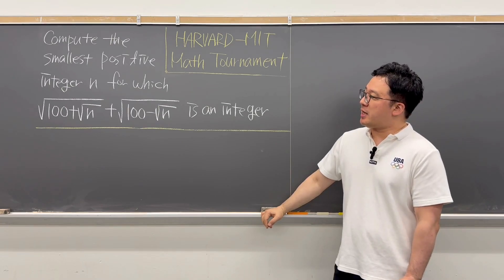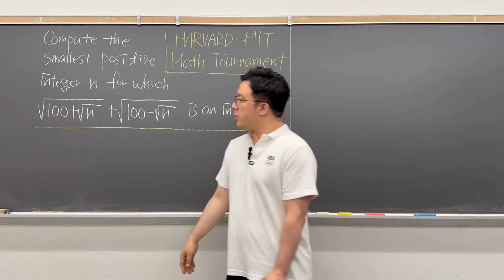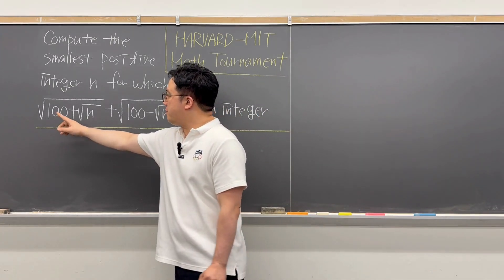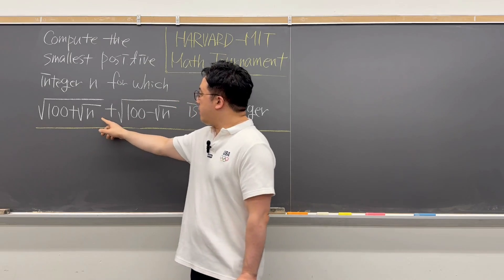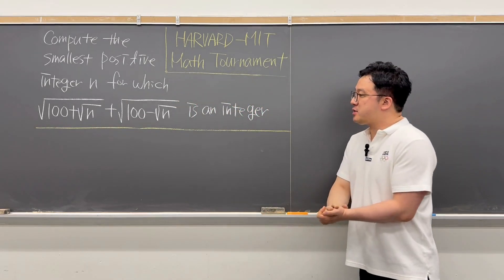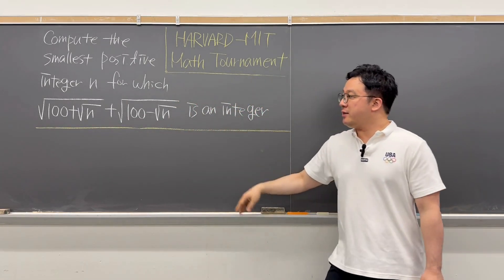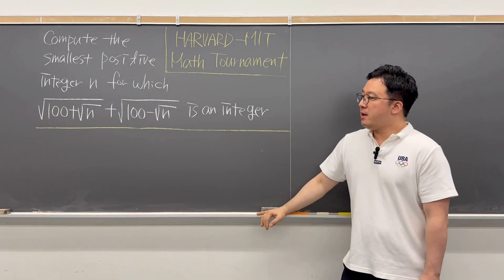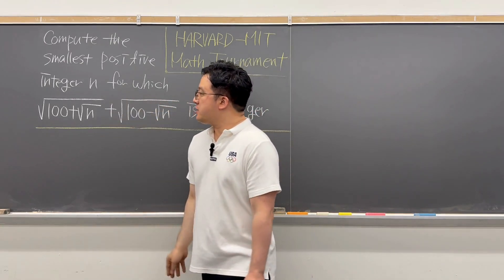The question is: compute the smallest positive integer n for which the square root of (100 plus the square root of n) plus the square root of (100 minus the square root of n) is also an integer. So we have a bunch of radicals here.